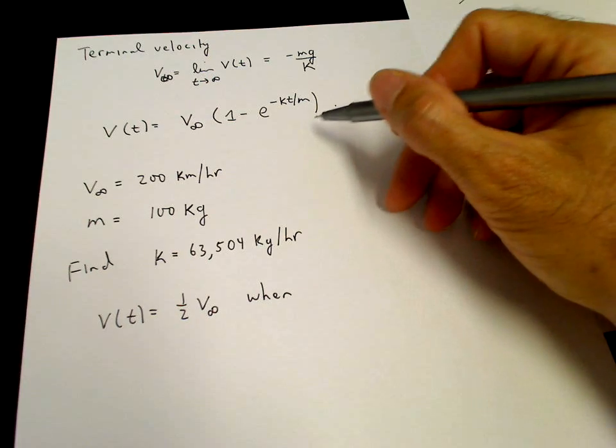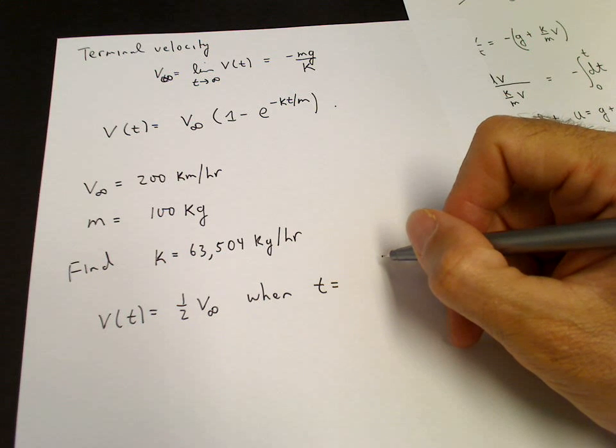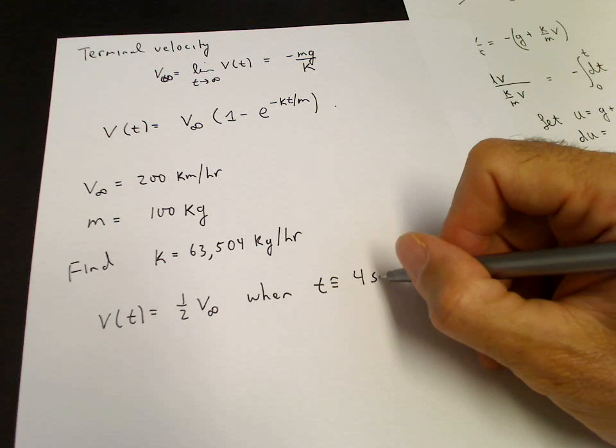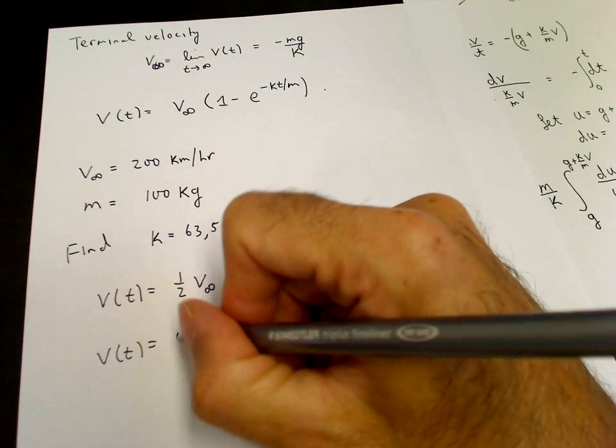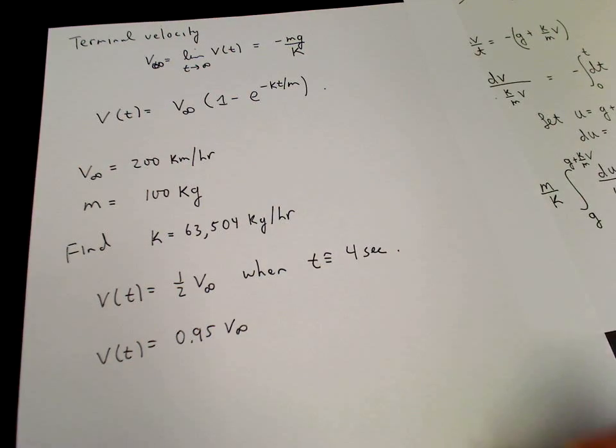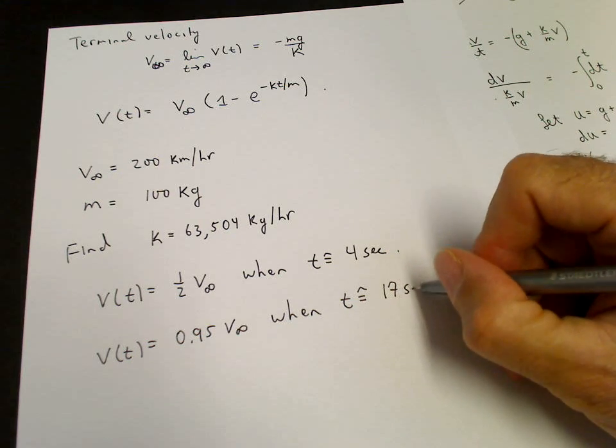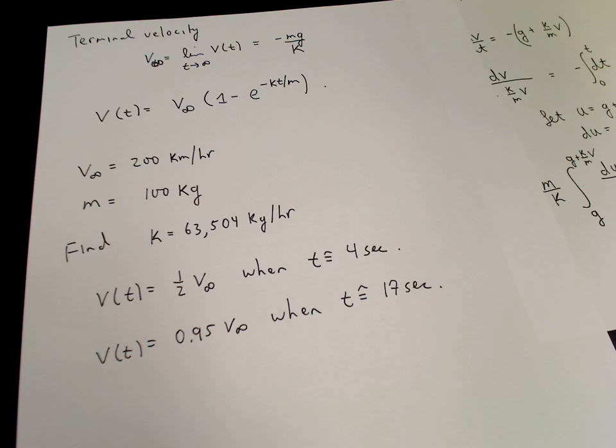At a time, we can solve this equation for t. And when we do that, we see that a skydiver will attain 100 kilometers per hour speed when t is about 4 seconds. And then v of t equals 95% of the terminal velocity. And plugging that in, we will find this is about 17 seconds. So the skydiver will go from 0 to 100 kilometers per hour in about 4 seconds. And then 100 kilometers per hour to 190 kilometers per hour in additional 13 seconds.